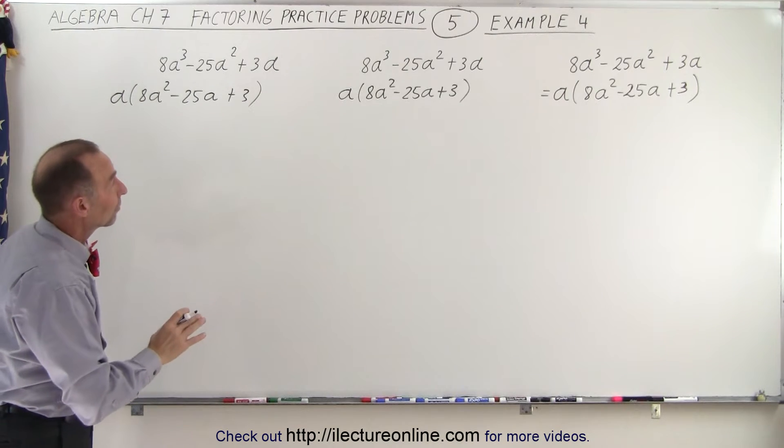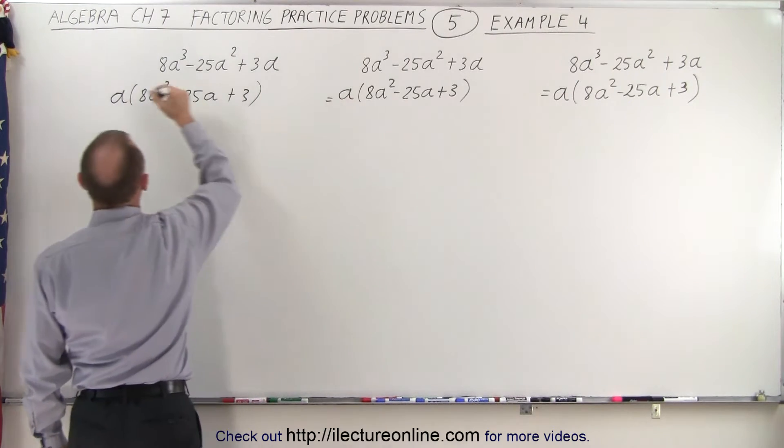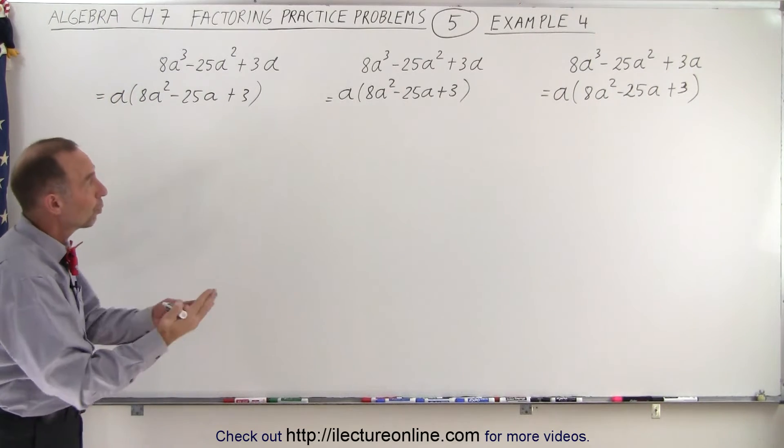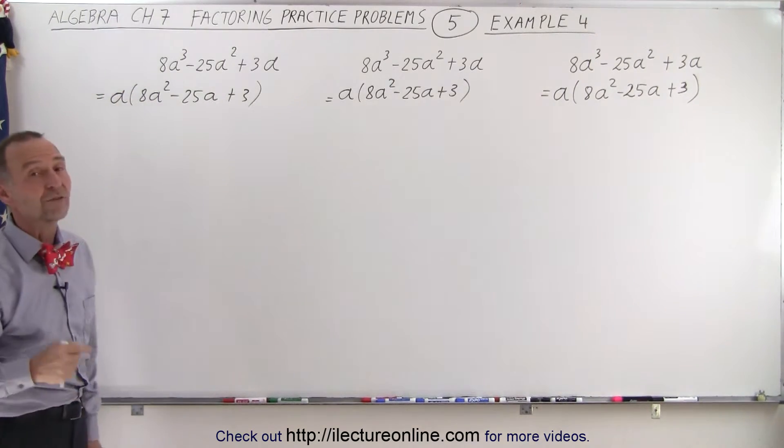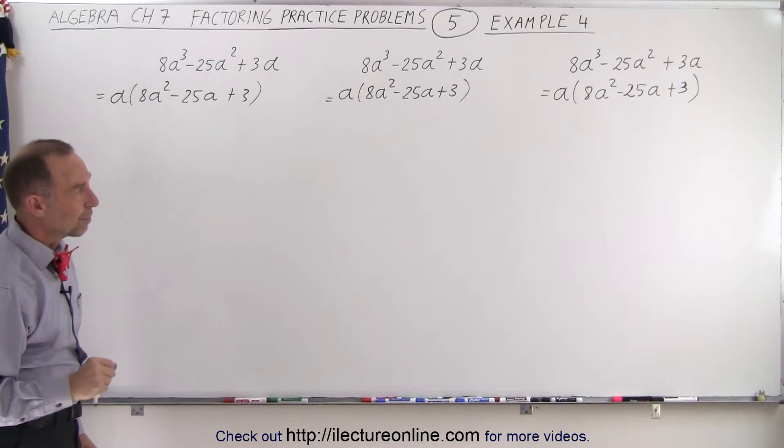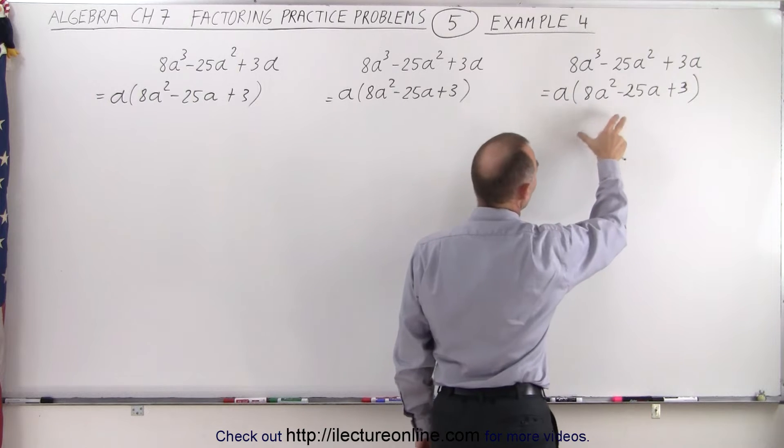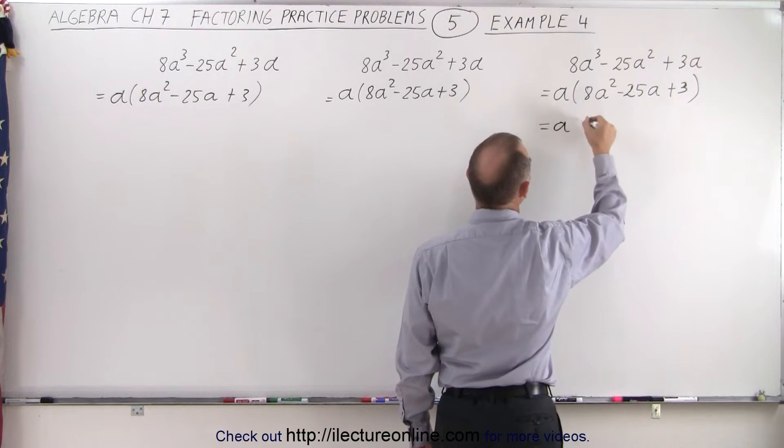Notice that in each case, obviously since it's the same problem, no matter what technique we use, we should always factor out a common factor and then factor what's remaining. So in our first example here, we're going to write this as the product of two binomials. So this is a times...